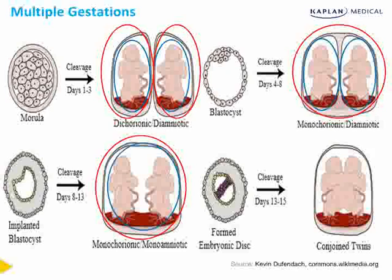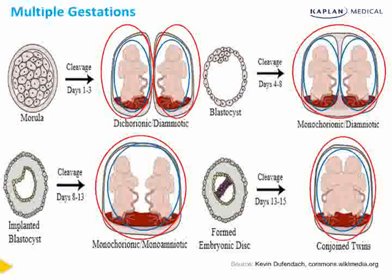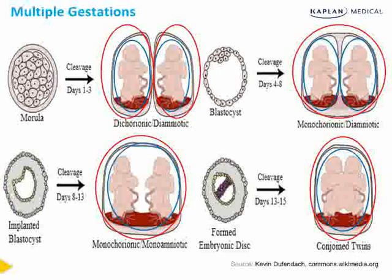When cleavage occurs on days thirteen through fifteen, we end up with conjoined twins — both in the same sac and sharing a placenta. All of this is important because management and screening is different for higher-risk pregnancies. With monochorionic twins, there is a risk for twin-twin transfusion syndrome: the development of vascular anastomoses which cause differential perfusion of one twin over the other, resulting in one twin becoming anemic and potentially developing hydrops fetalis, while the other can experience volume overload.